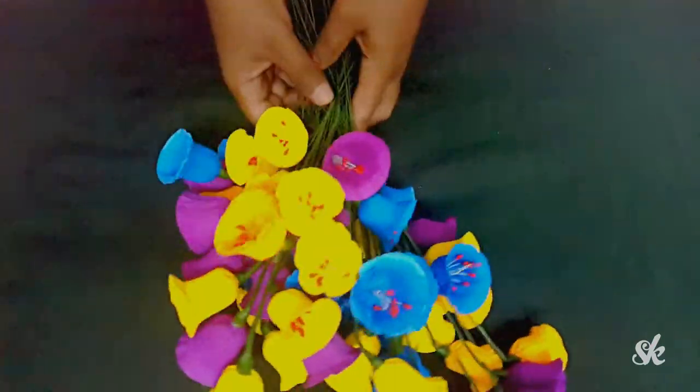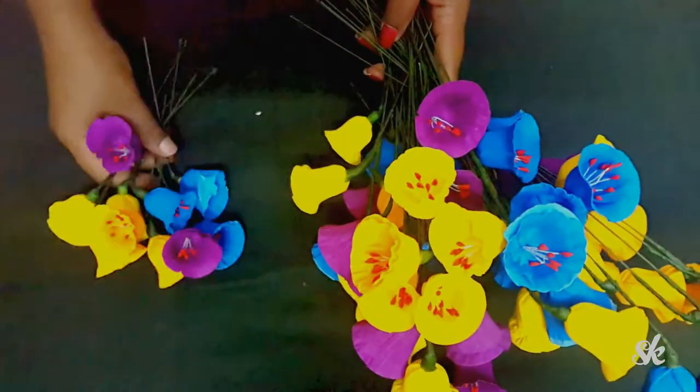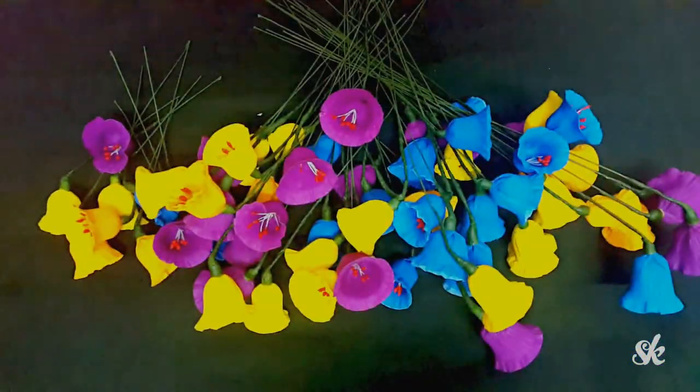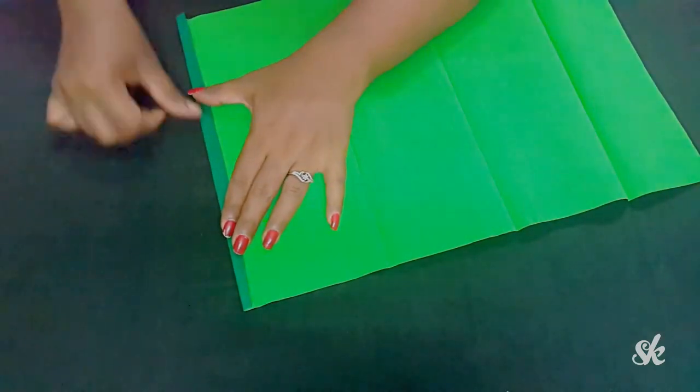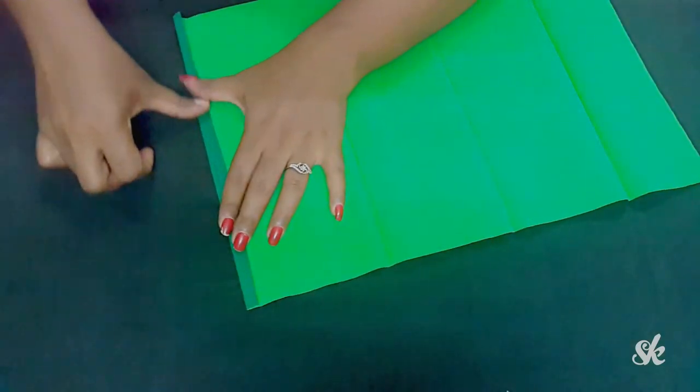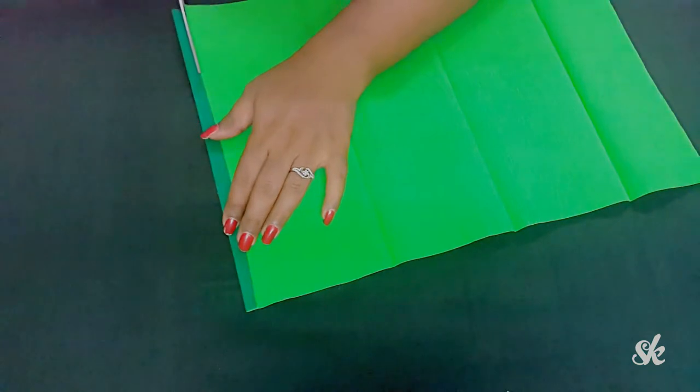Moving on to the leaves: cut out a thin folded strip from the green colored crepe paper. As we are making here, two leaves.